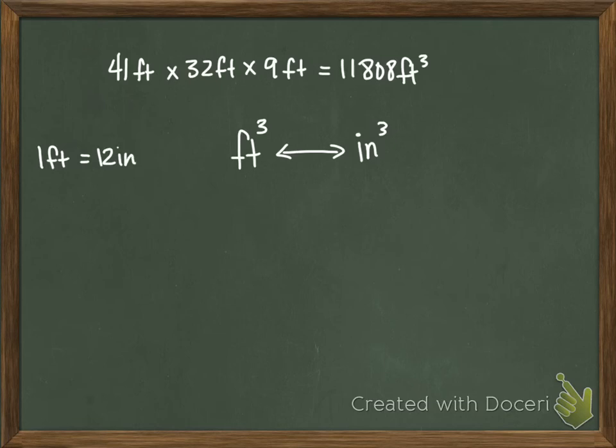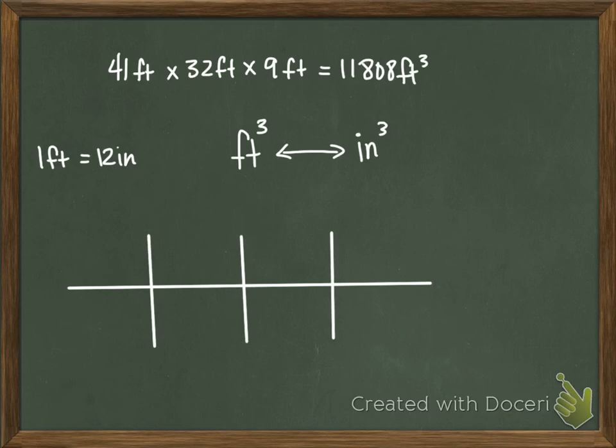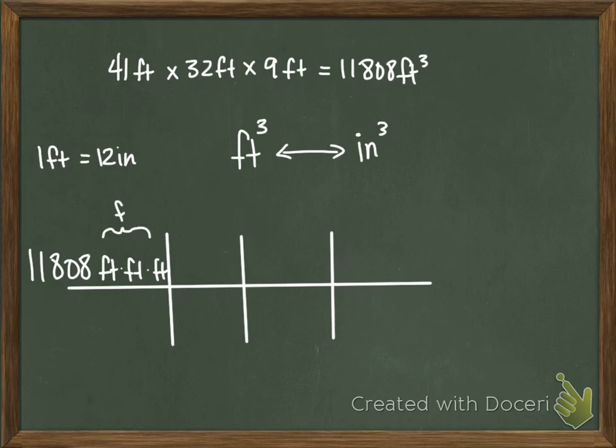We know that one foot is 12 inches, but we can't just take our 11,808 and multiply by 12 because that's only handled one of our feet. I'm going to put 11,808 feet cubed, which is really feet times feet times feet. When I convert I'm going to have to convert three times because I want to get rid of all of the feet. I'm going to go 12 inches up here is one foot—that handles this one.